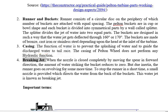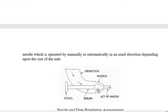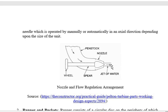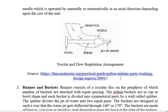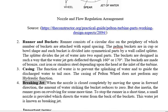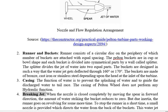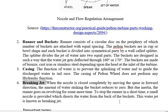Another important part is the braking jet. When the nozzle is fully closed by moving the spear forward, no fluid strikes the wheel. However, due to inertia the wheel will still continue rotating, causing a loss of energy. To stop the wheel quickly, a braking jet is placed opposite to the main nozzle — it is also supplied by a small nozzle.